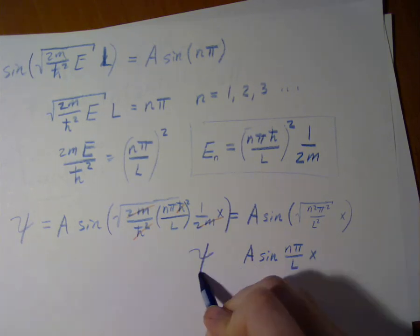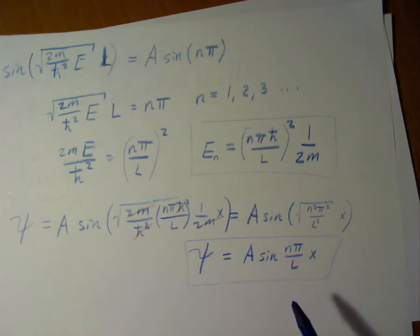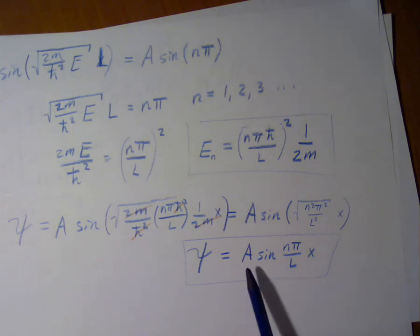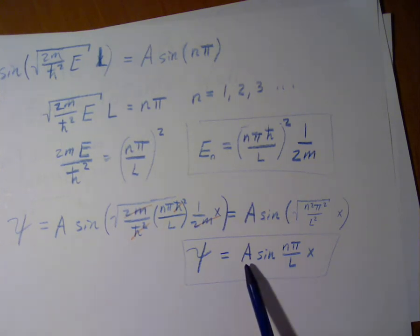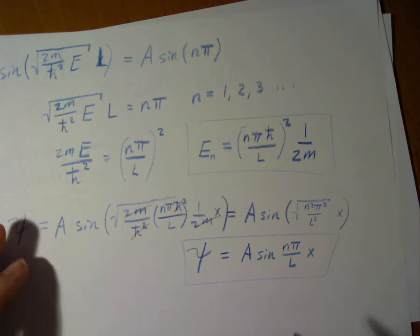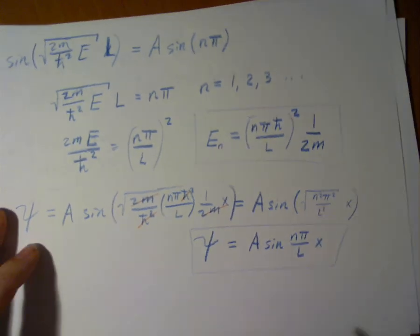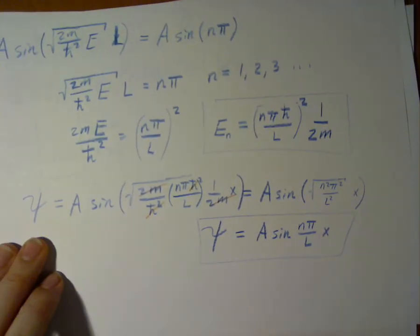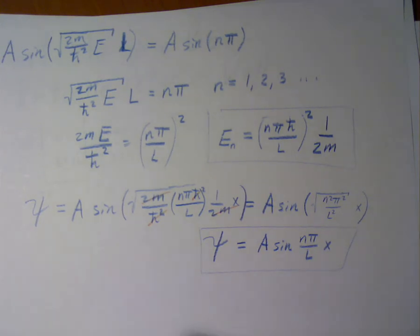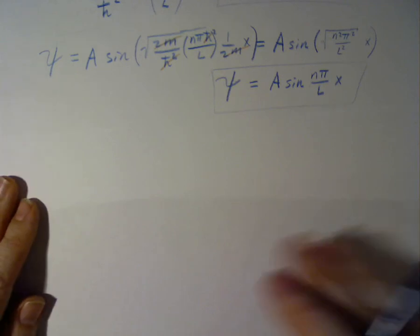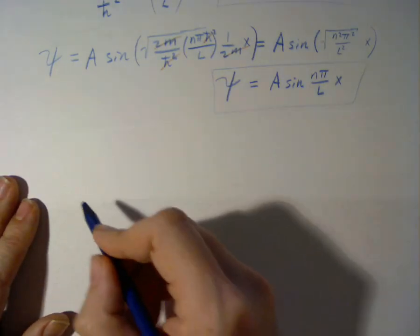This is our wave function. However, we are not quite done because we do not know what A is, capital A. This is an unknown. However, the wave function is subject to one more condition that we need to satisfy. That is called normalization, namely that the probability of the wave function over all space can't be more than one.